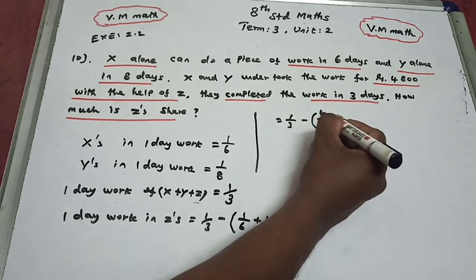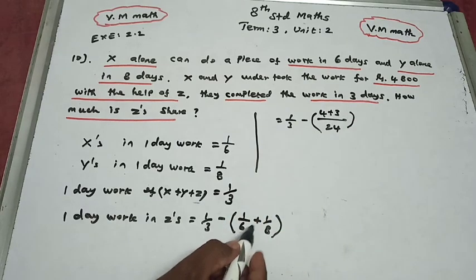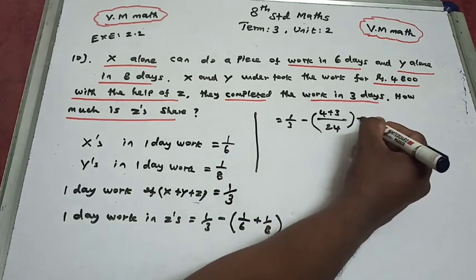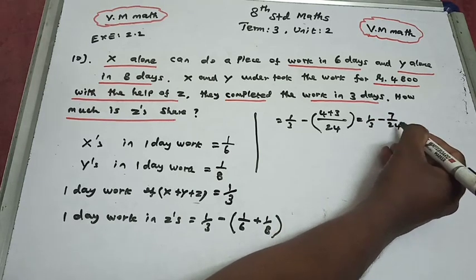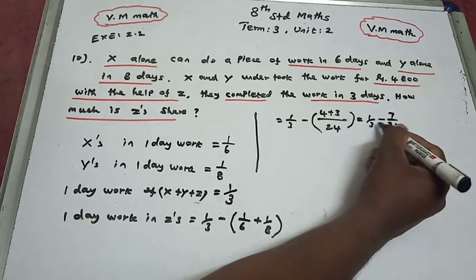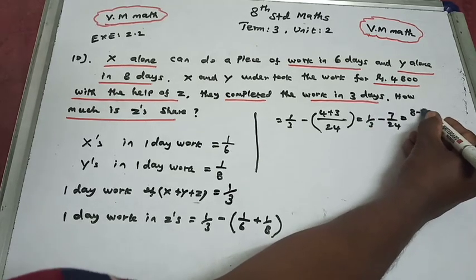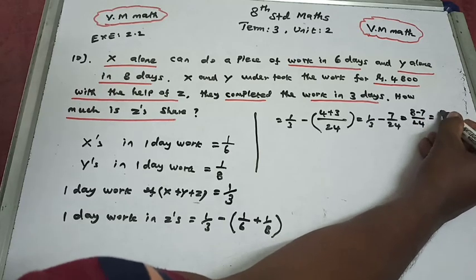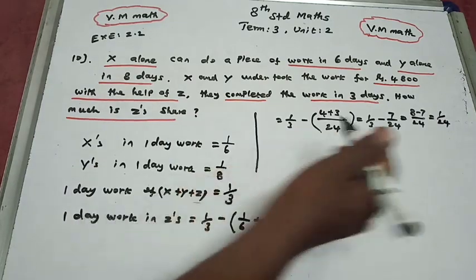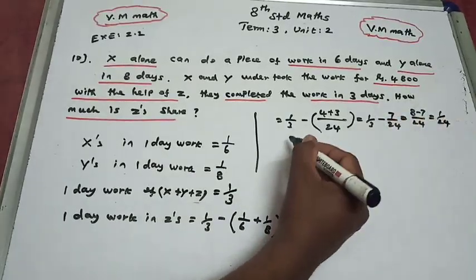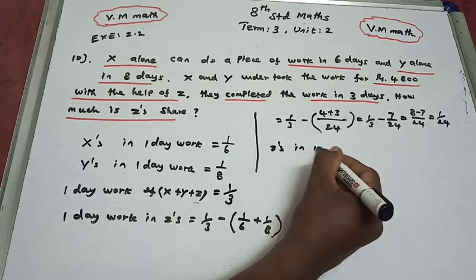4 plus 3 equals 7. So X and Y's combined 1-day work is 7/24. Therefore Z's 1-day work is 1/3 minus 7/24. Converting 1/3 to 8/24, we get 8 minus 7 over 24, which equals 1/24.